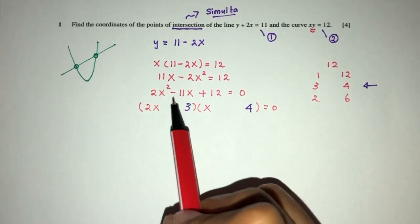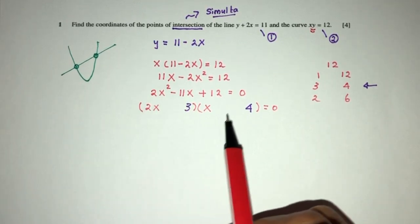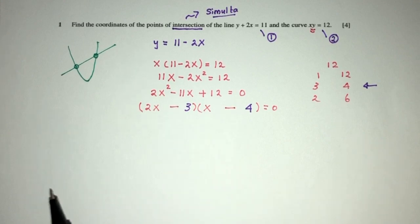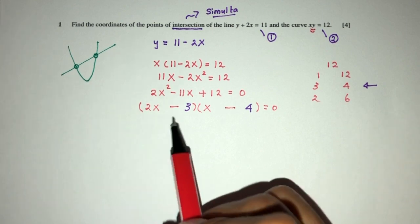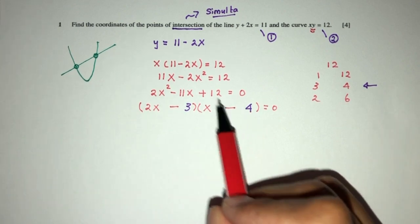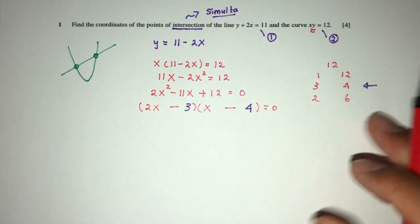Now, to get minus 11, I have to have minus 8 and minus 3, because minus 8 minus 3 is minus 11. To check, minus times minus is plus, so here we have plus. This is a good factorization.